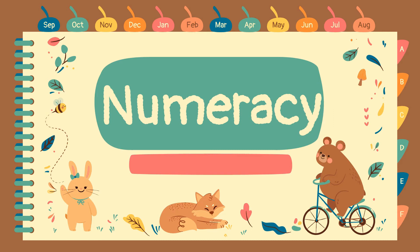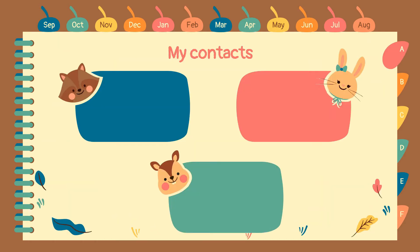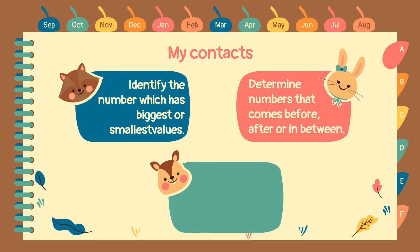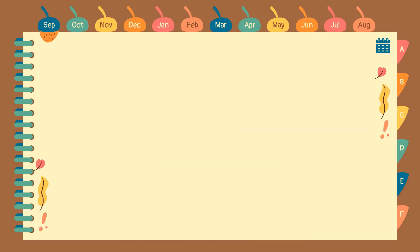Hi kids! It's teacher Tracy again, and today we will be learning a new lesson in Numeracy. For today's learning objectives, we're going to learn how to identify the number which has the biggest or smallest value. Next, determine numbers that come before, after, or in between. And we're going to arrange numbers from least to greatest.